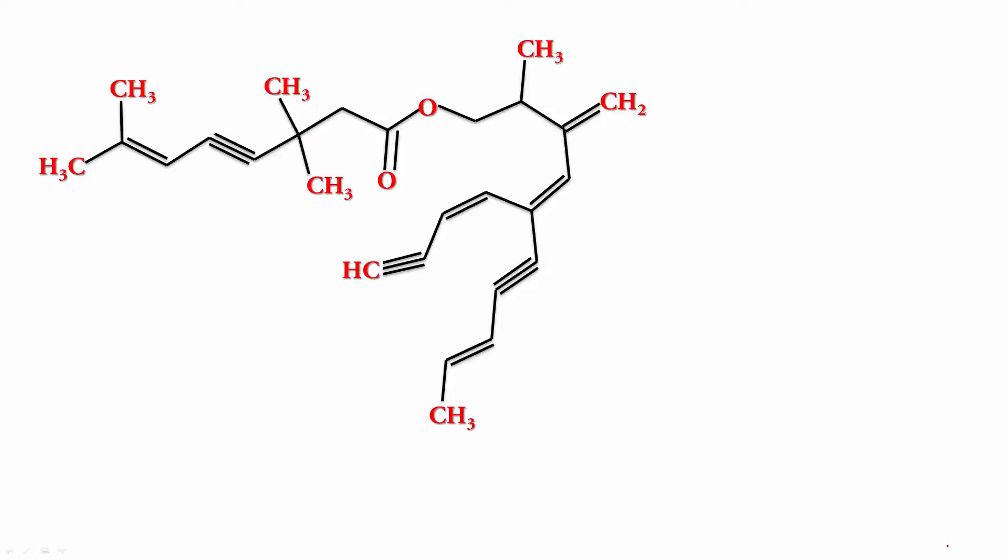But before you do that please ensure that you've taken all possible care to write the name correctly by looking into the right parent chain in each case. All right. So let's start naming it. First of all I want to know what is the alkyl part. Obviously it is the one that is attached to O. It is this part. This entire thing. This entire thing is your alkyl part.